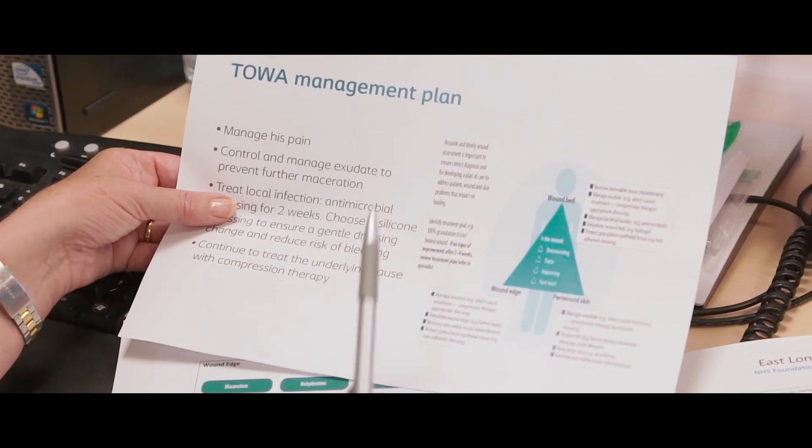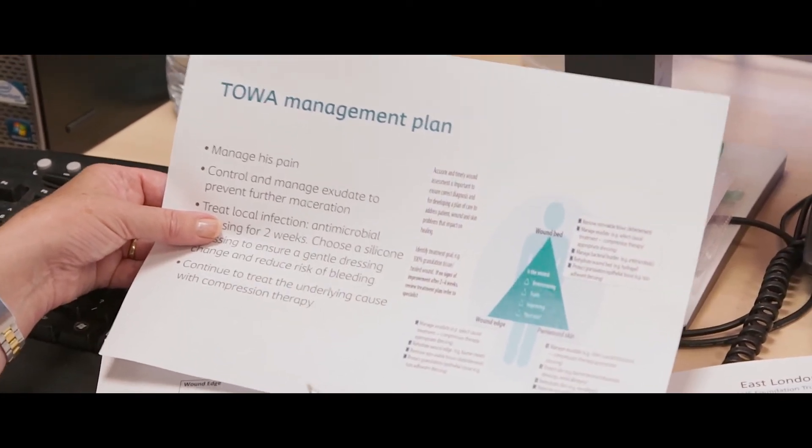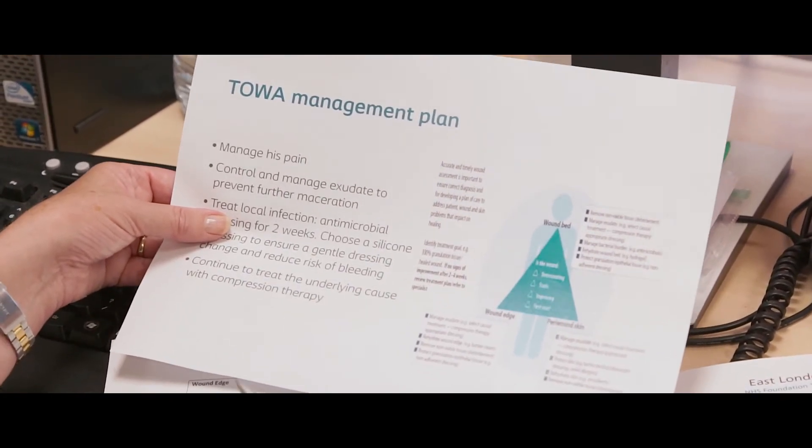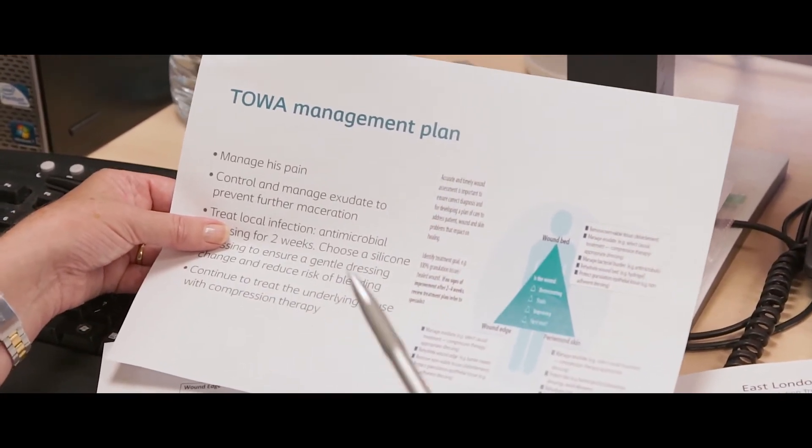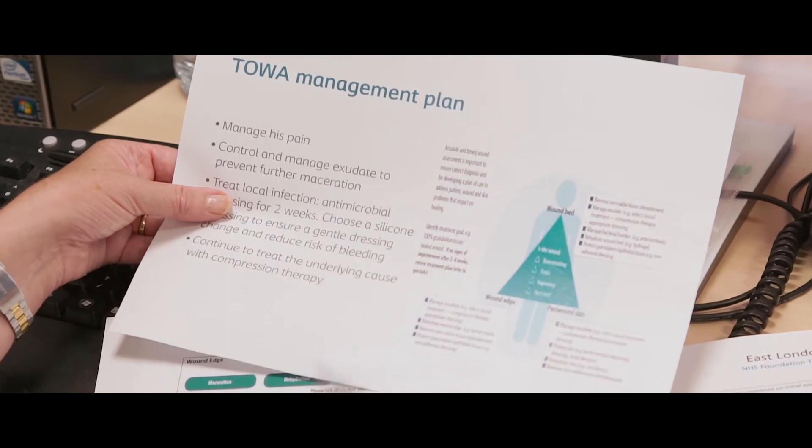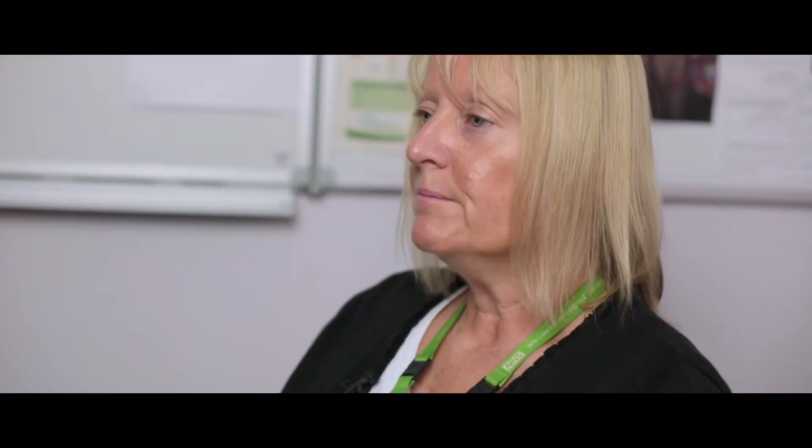I look at all three areas of the wound — the wound bed, the wound edge and the peri-wound skin. I'm able to use the Triangular Wound Assessment to assess all types of wounds and it guides my management decisions so I can improve outcomes for patients.